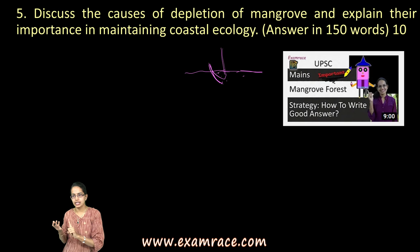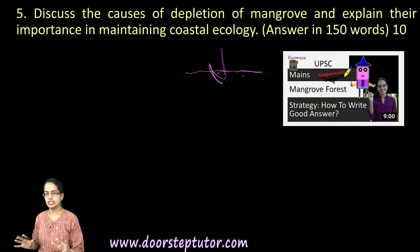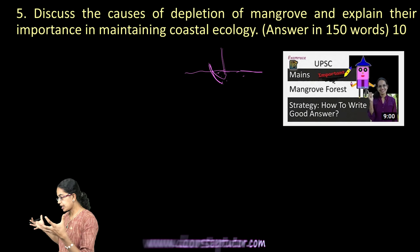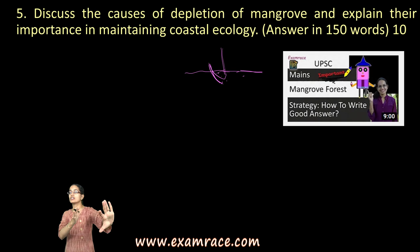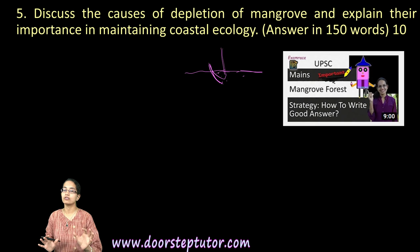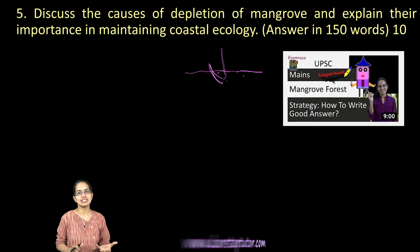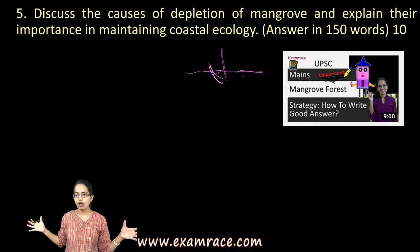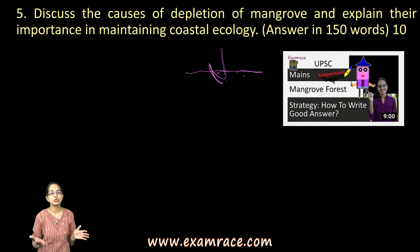Mangroves are one of the most productive terrestrial ecosystems. They act as water filters, water purifiers, and shock absorbers against high tides and waves. Scientific management and local community conservation practices have given mangroves a good thrust. The main causes of their depletion include damming of rivers, over-harvesting, pollution, climate change, and cutting and clearing of forests.